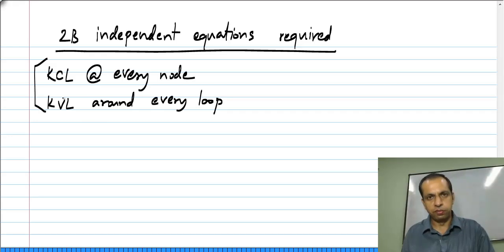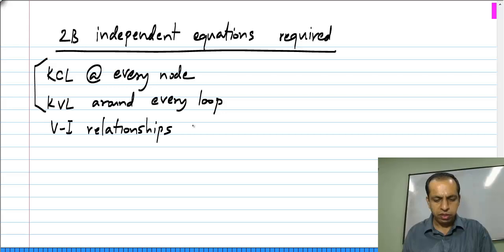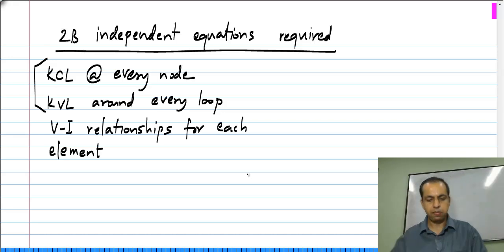And finally, these are of course general properties of all circuits. Finally, we have the specific properties of elements in our circuit and we have VI relationships for each element. So these are what we have to use to solve our circuit.